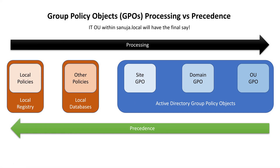Welcome back. When you are working with Group Policy Objects, it is important to understand the difference between processing and precedence. I created this diagram so you will have a better understanding of what is happening when you create a GPO on your Windows Server.